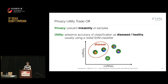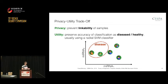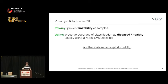We are not only trying to prevent linkability but also have to look at the utility of the data — preserving the accuracy of a classification of a diagnosis as diseased or healthy. Biomedical researchers typically use a radial SVM classifier. If noise is added, points could move such that a healthy person is classified as diseased or a diseased person is classified as healthy. We measure classification accuracy on another dataset with more than 1,000 participants, each with one of 19 different diseases, but only one point in time.